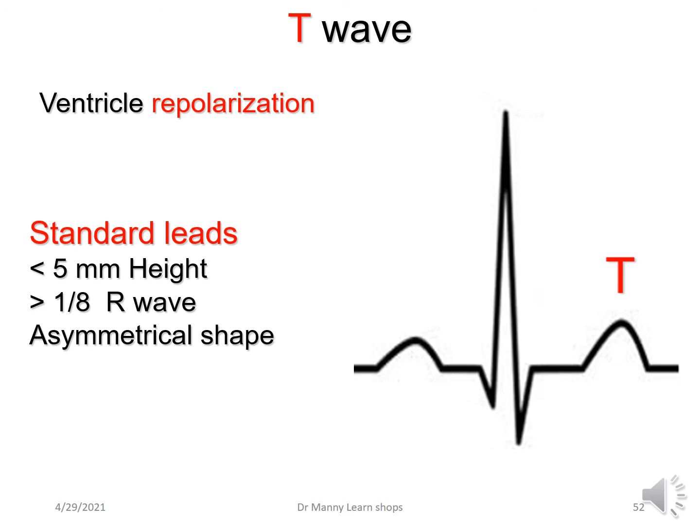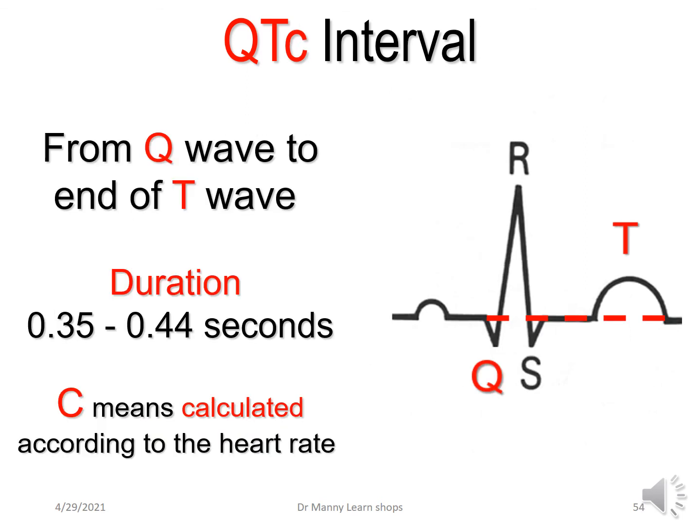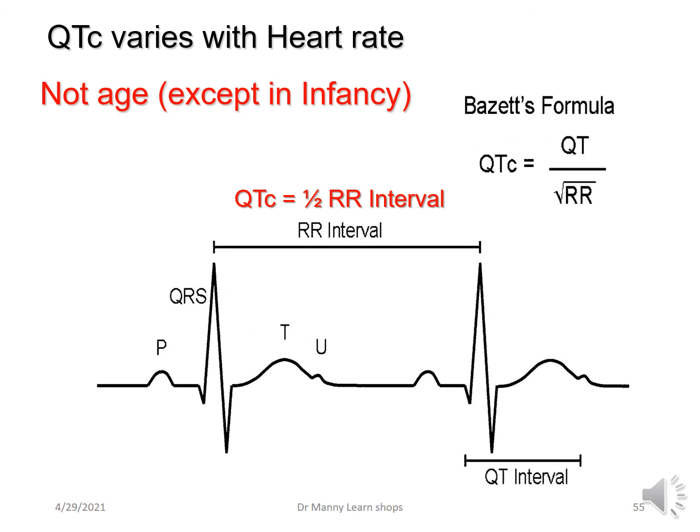The QT interval represents total time for ventricular depolarization and repolarization. As a general rule, it's about 0.35 to 0.44 seconds — anything less or more prolonged can potentially be problematic and dangerous. The QTc — where C represents calculated — is because electrophysiologists calculate the QTc interval according to heart rate. However, for us, the duration is typically the same: 0.35 to 0.44 seconds. This can vary in infancy, but in an adult it typically doesn't. Review the paediatric ECG LearnShop for more on that.